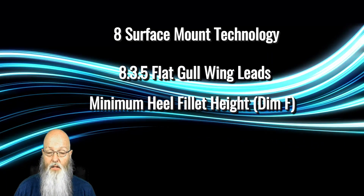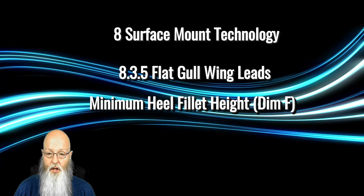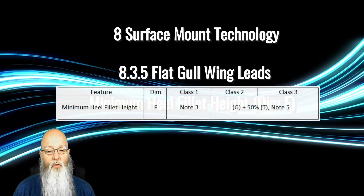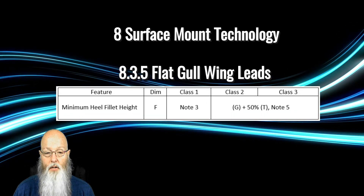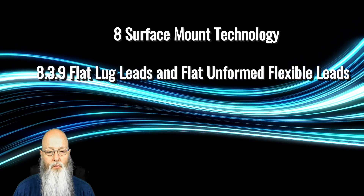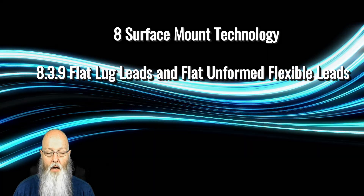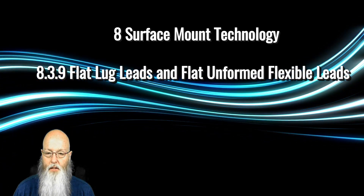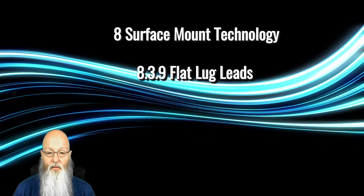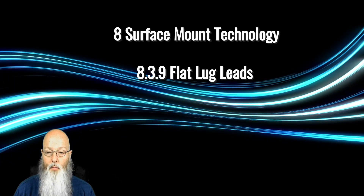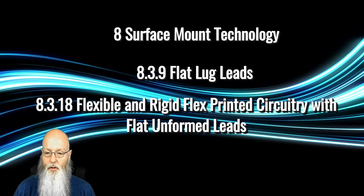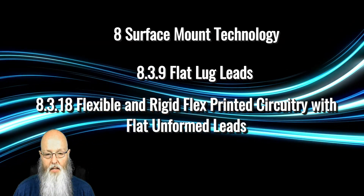Minimum Heel Fillet Height has been combined. Where Revision G had the minimum heel fillet criteria based on lead thickness, Revision H has gone back to a common criterion regardless of lead thickness. In previous revisions, flat lug leads and flat unformed flexible leads were in a combined section. Revision H splits them out: flat lug leads is section 8.3.9 and flat unformed flexible circuit leads are in 8.3.18.